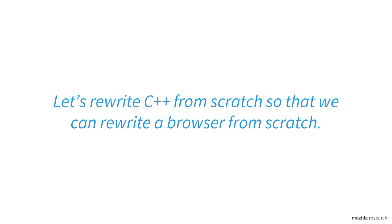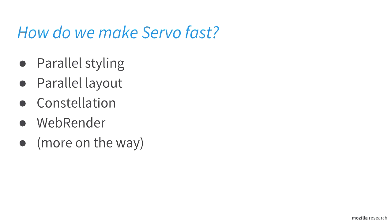Some people at Mozilla were like, maybe we can do something about this. So we had this idea: let's rewrite C++ and then use that to rewrite a browser. We have really big yaks at Mozilla. So the goal of Servo is to use all of those 700 million transistors, and how we do it is through these four-ish things.